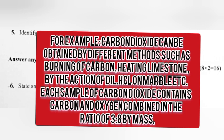Example: Carbon dioxide can be obtained by different methods such as burning of carbon, heating limestone, by the action of dilute HCl on marble, etc. Each sample of carbon dioxide contains carbon and oxygen combined in the ratio of 3 to 8 by mass.